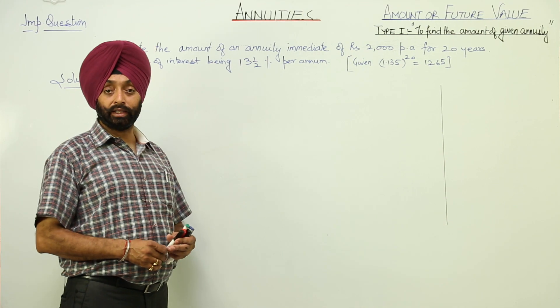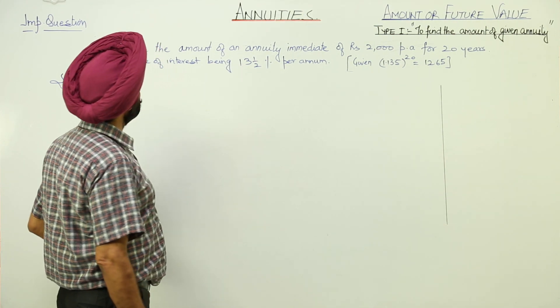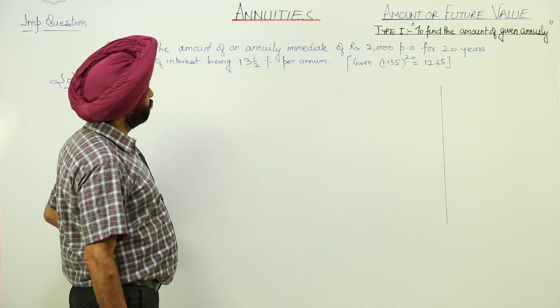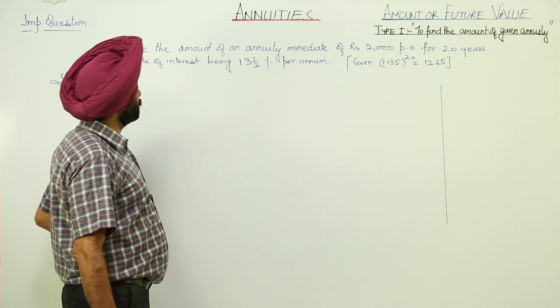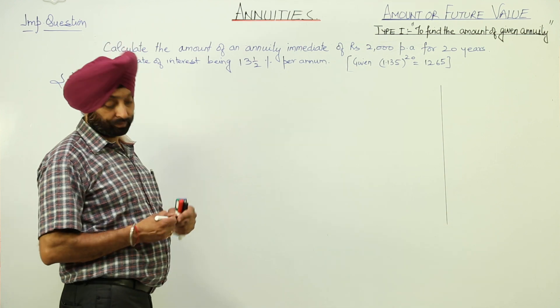Question for the immediate annuity. It is given that the amount is rupees 2000 per annum for 20 years at the rate of 13 and half percent per annum.